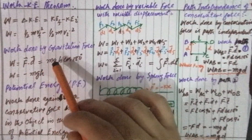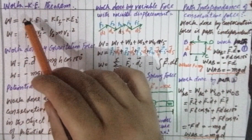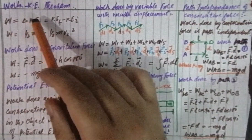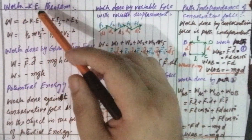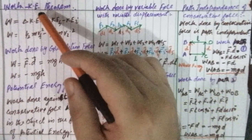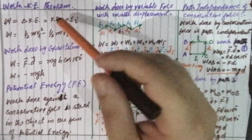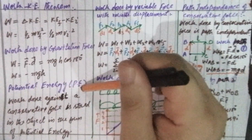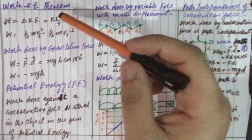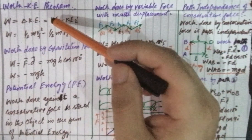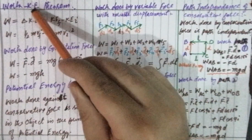In this lecture we are going to discuss further about work and energy. The energy we are going to discuss is called mechanical energy, which has two types: kinetic energy and potential energy. Both kinetic energy and potential energy together are called mechanical energy. The kinetic energy of an object is due to the motion of the object — when an object is moving, it possesses energy called kinetic energy.